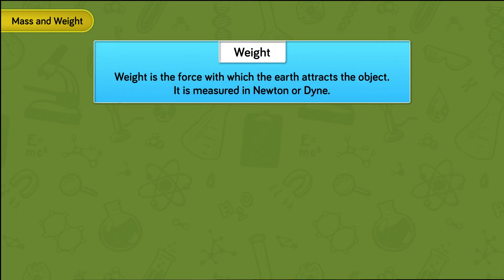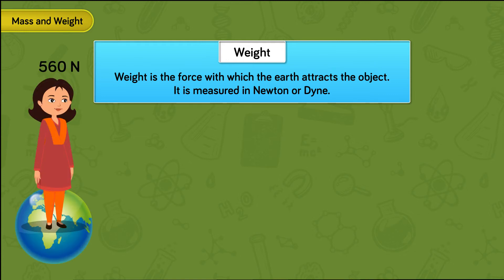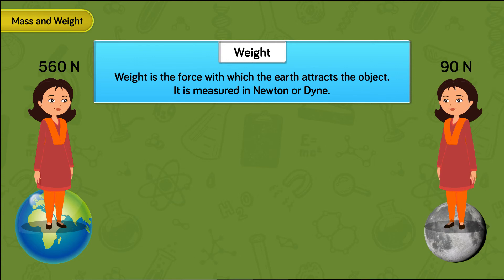Weight is the force with which the earth attracts the object. It is measured in newton or dyne. For example, the weight of the girl on the earth is 560 newton and on the moon is 90 newton.